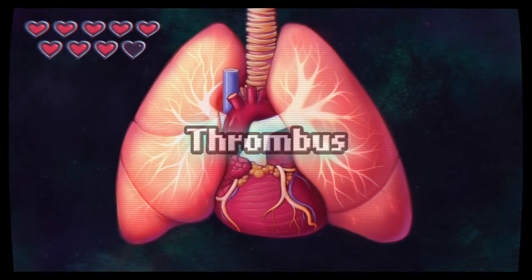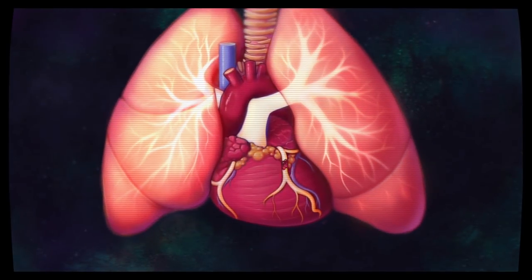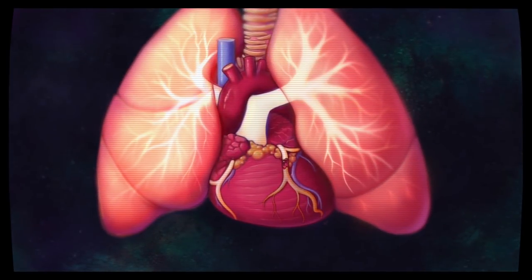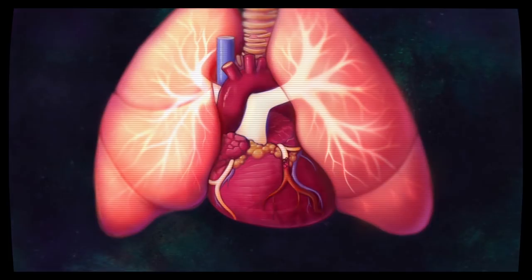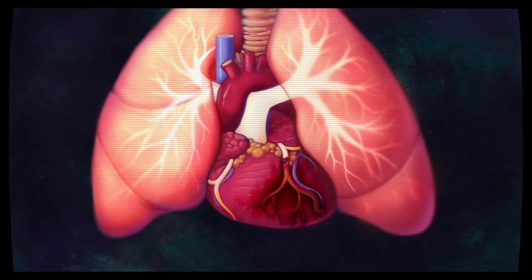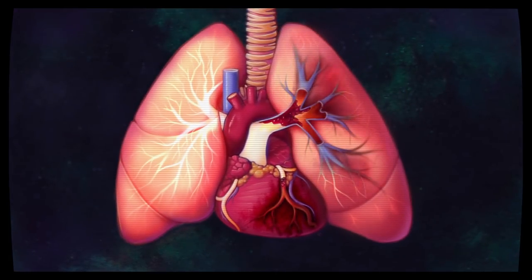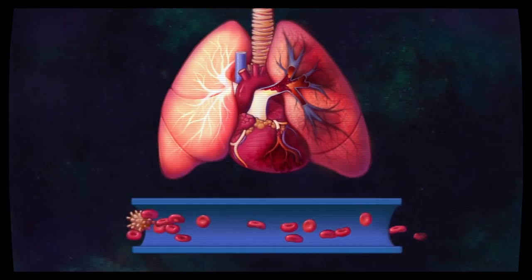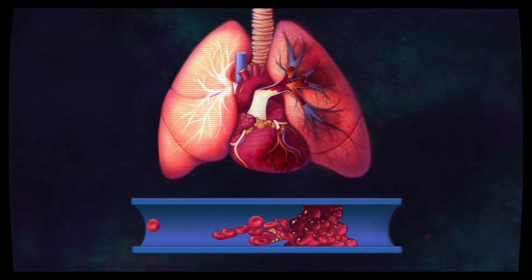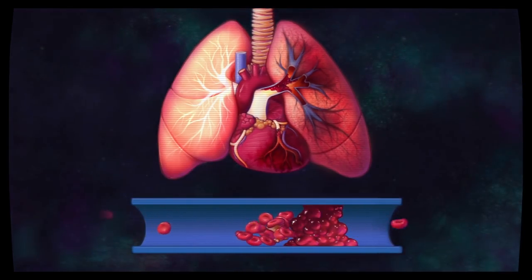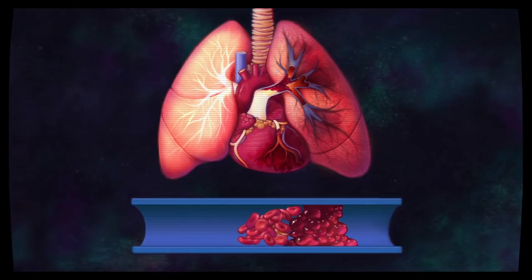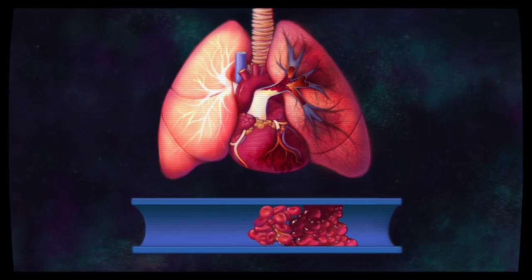Thrombus. A clot in the heart supplying vessels causes a myocardial infarction or heart attack. Clots in the lungs are called pulmonary emboli. Blood flow is reduced or stopped beyond this point, resulting in hypoxic death of downstream tissue, and soon the patient if not fixed.